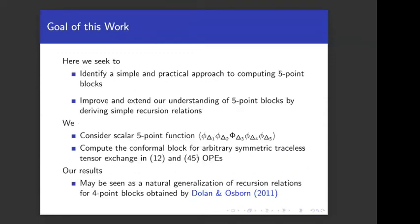In this work, we seek a simple and practical approach to determining five-point conformal blocks in a five-point function of purely scalar external operators. We hope to extend our understanding of five-point blocks by giving a set of simple recursion relations that enables us to effortlessly generate these objects. We restrict attention to scalar external operators and seek to compute the conformal block for arbitrary symmetric traceless tensor exchange in the 1,2 and 4,5 OPEs. Our results may be seen as a natural generalization of the original recursion relations of Dolan and Osborn for the four-point case.